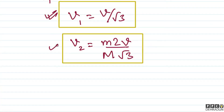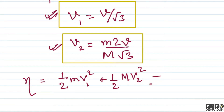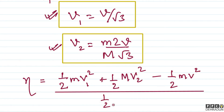Now we have v1 and v2. We can calculate eta, the fractional change in kinetic energy. The change is final minus initial, and fractional change is final minus initial upon initial. The final kinetic energy is half into small m into v1 squared plus half into capital M into v2 squared. We subtract from this the initial kinetic energy, which is half into small m into v squared, since only the particle of mass small m was moving initially. We divide by the initial kinetic energy, half mv squared.